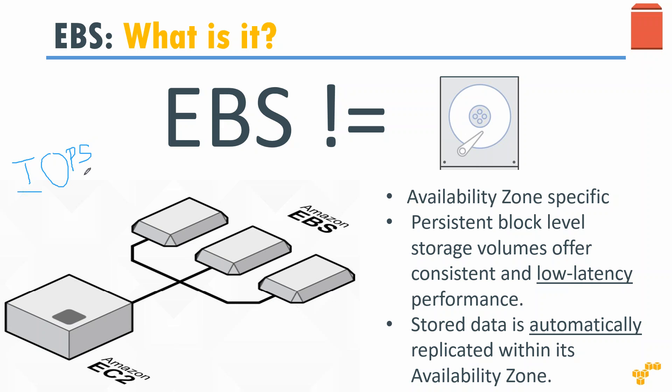One important scenario where EBS is better than an ordinary spinning or magnetic disk is that you can decide how much IOPS you want by making a few clicks in the console, and Amazon will ensure that performance is delivered. Compare that to an on-premise setup where you might wait weeks before your disk performance is increased. Also, storage data is automatically replicated within its availability zone, giving you highly durable storage.